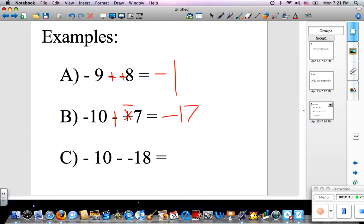Let's do one more. Negative 10 minus negative 18. I'm just going to add the opposite. So, what I have here now is negative 10 plus positive 18, which is simply positive 8.